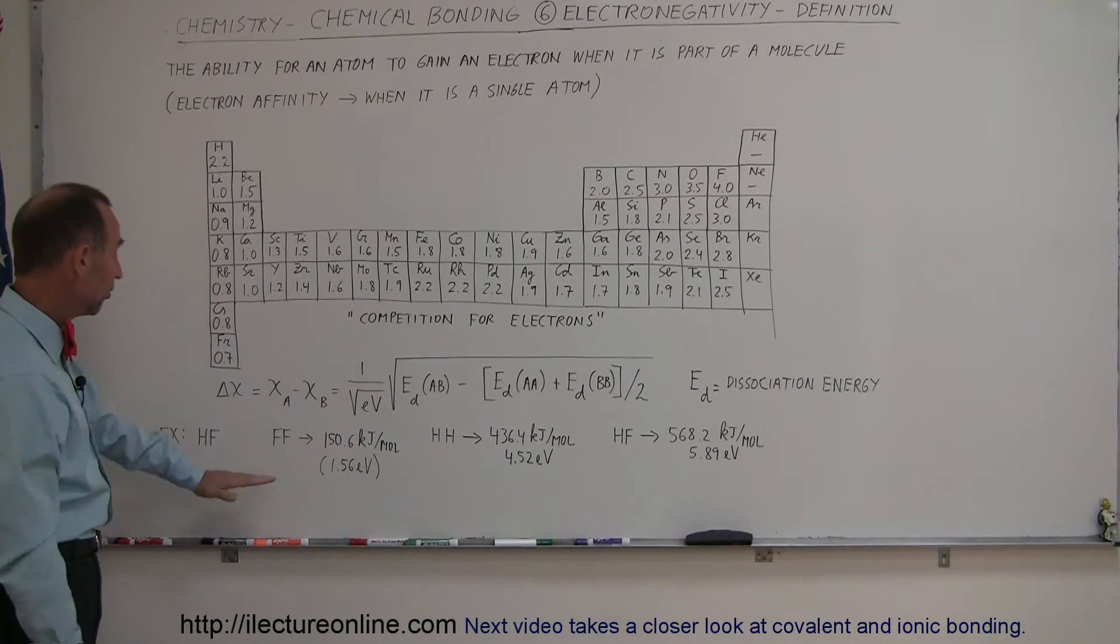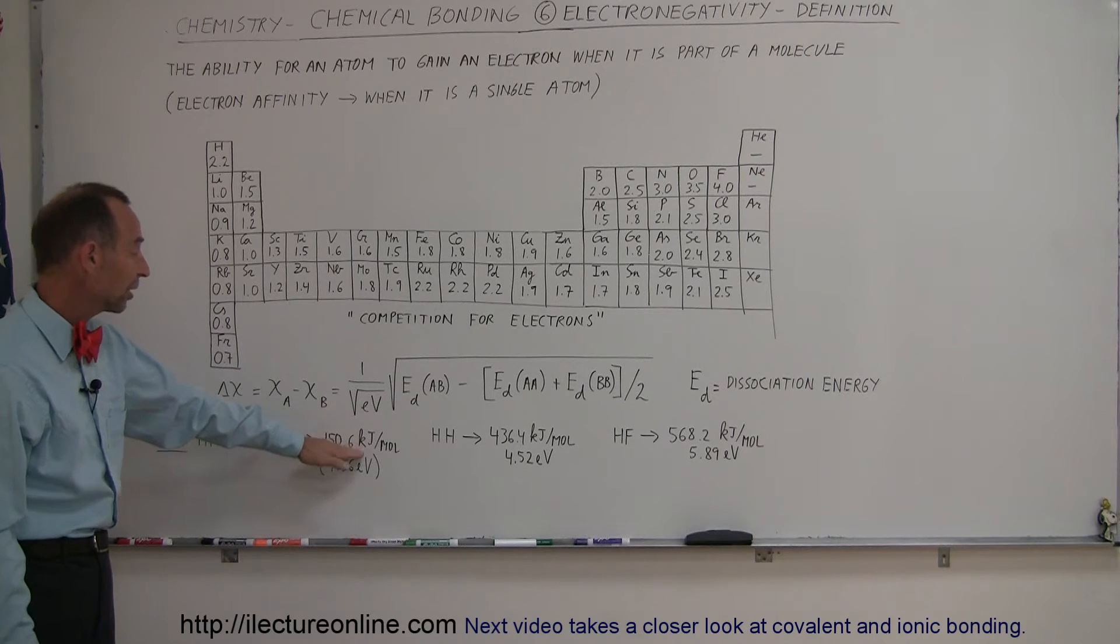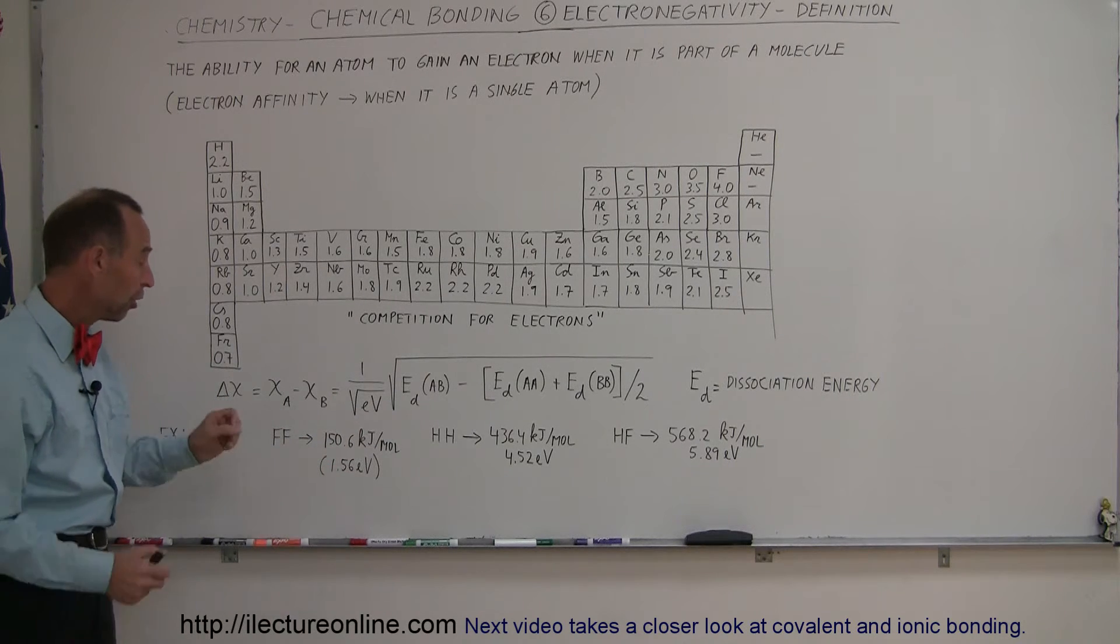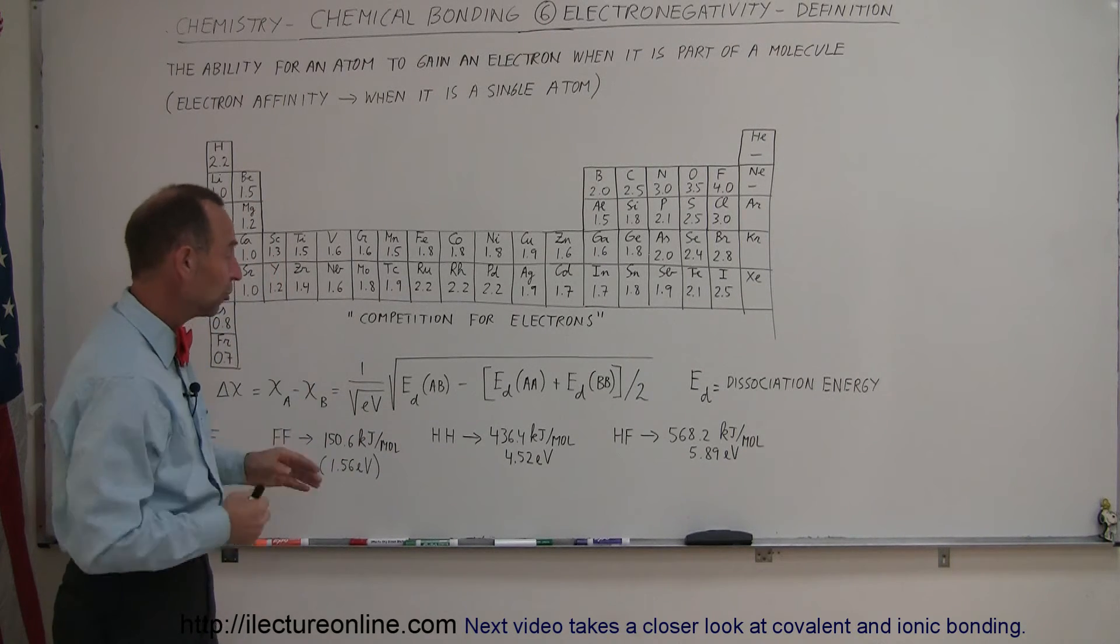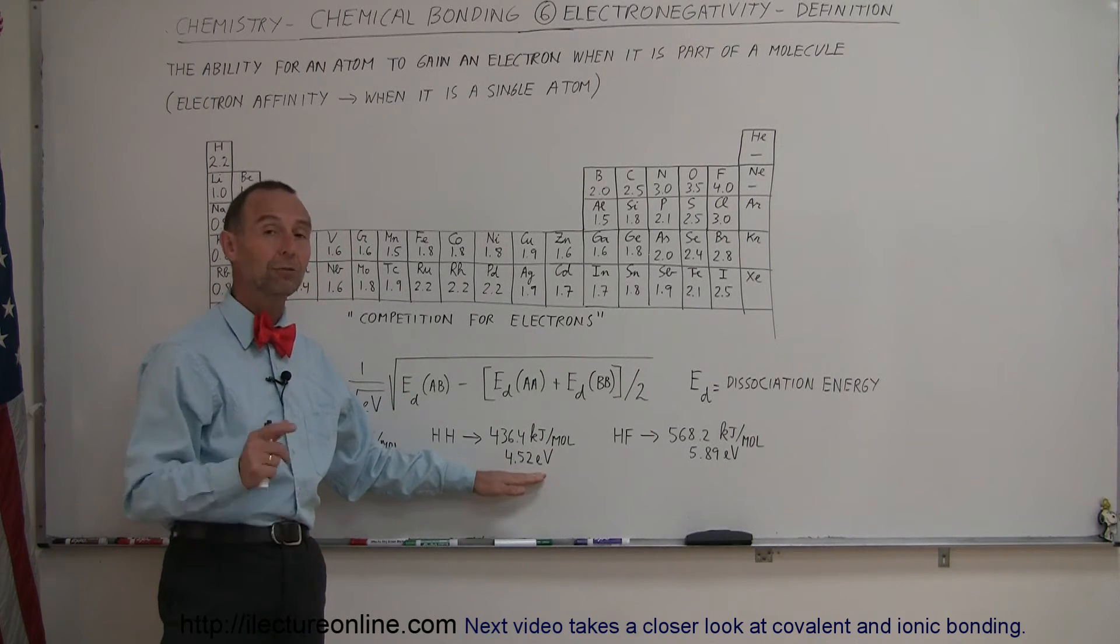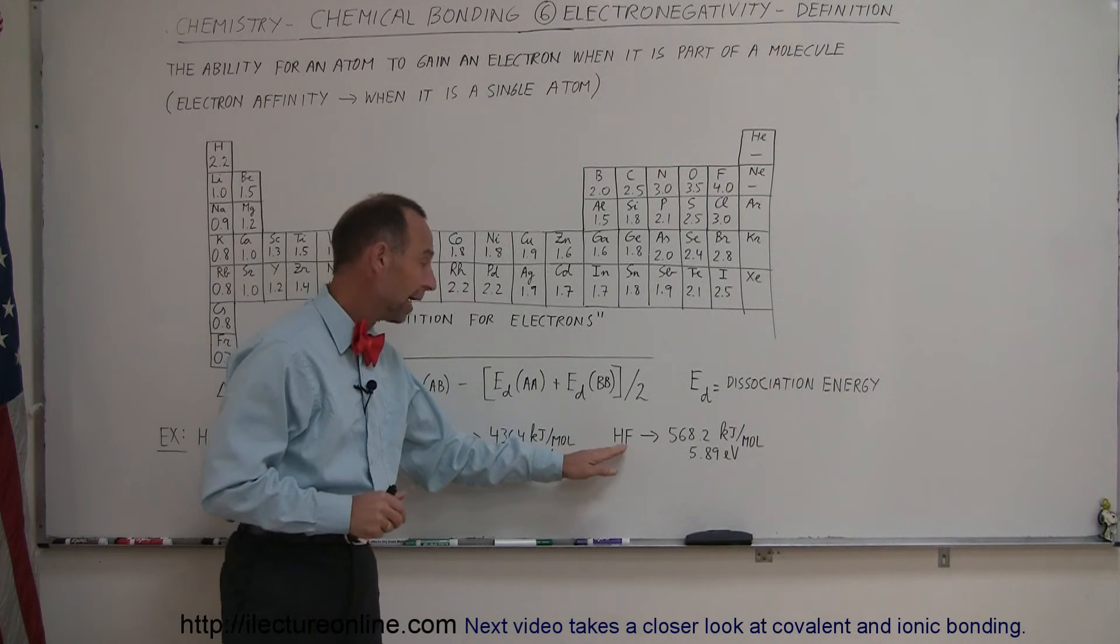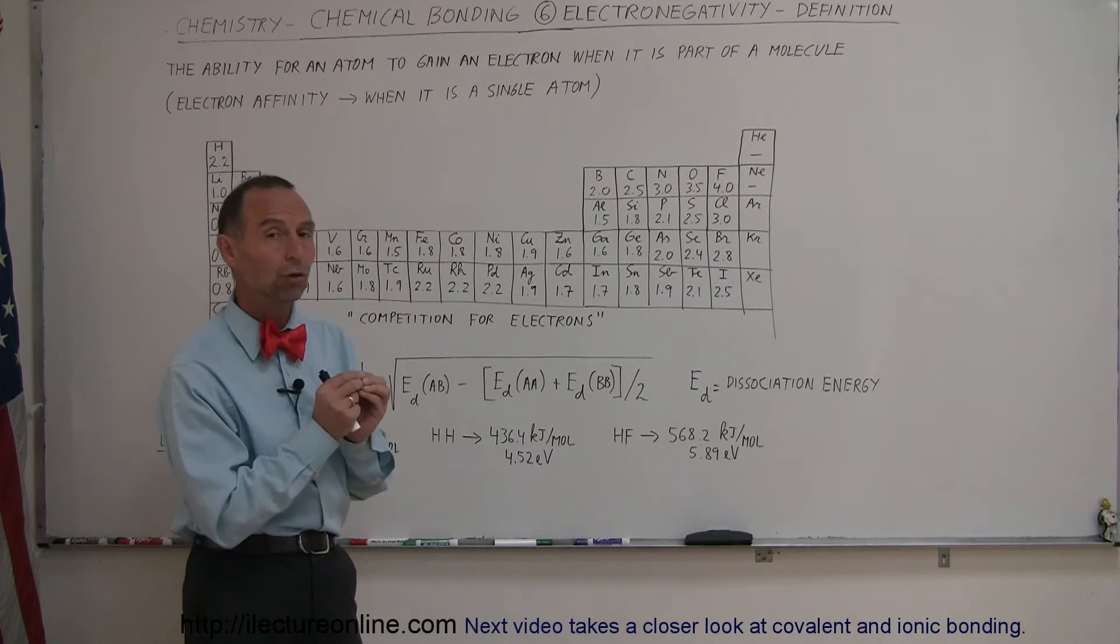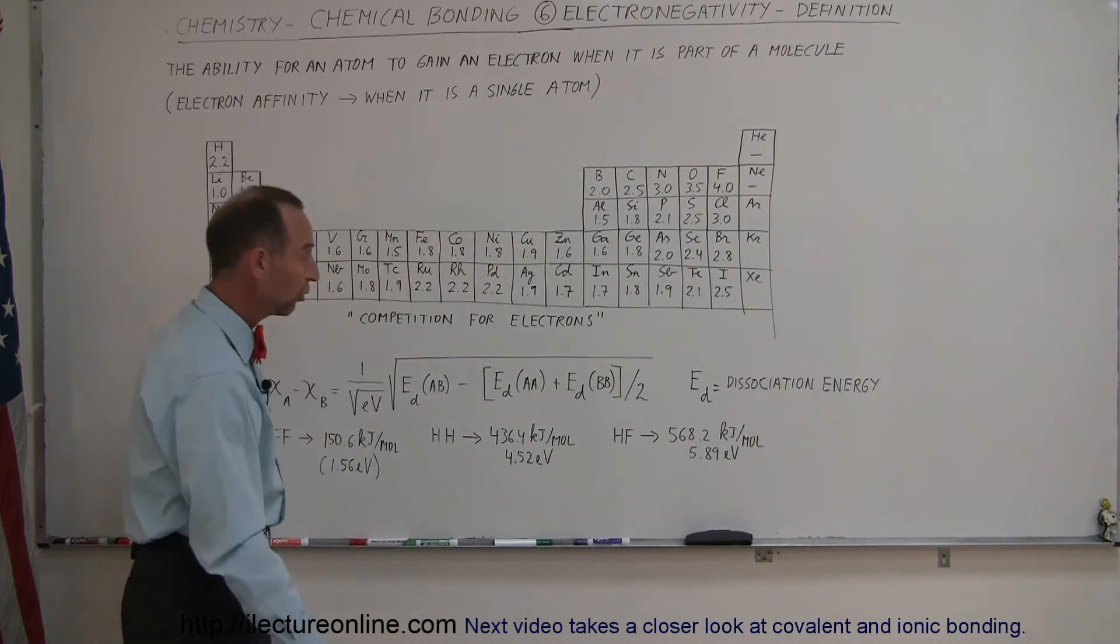But anyway, just to give you an example, the dissociation energy for two fluorine atoms is 150.6 kJ per mole, which comes out to 1.56 electron volts per molecule. The same for hydrogen. The energy required to pull two hydrogens apart is 436.4 kJ per mole. That comes out to 4.52 electron volts per molecule. And then for a hydrogen fluoride molecule, it takes 568.2 kJ per mole to pull those apart, which equates to 5.89 electron volts.